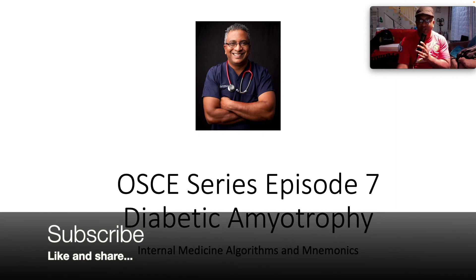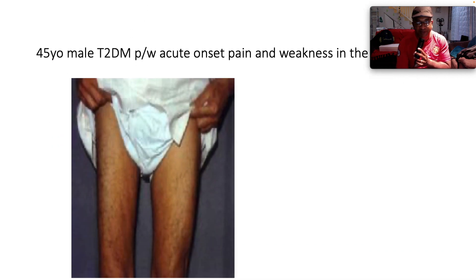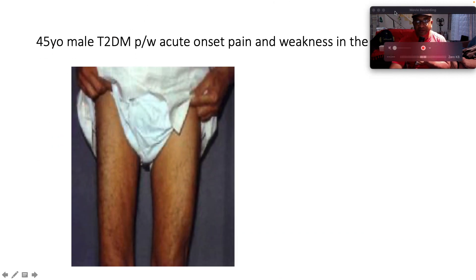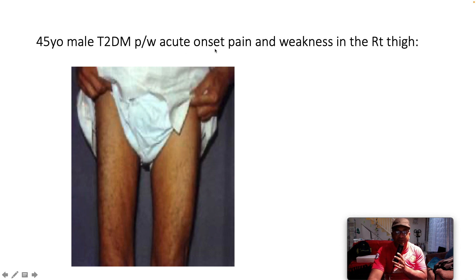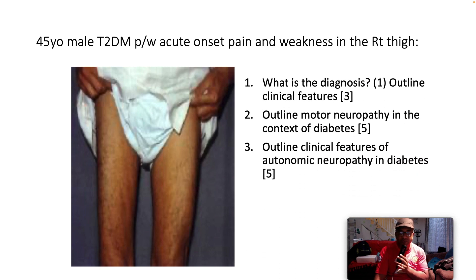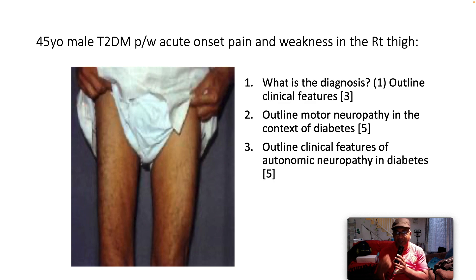If you haven't yet subscribed to my channel, I strongly encourage you to hit that subscribe button. So this is the stem of our question. We have a 45-year-old male with type two diabetes mellitus, presenting with an acute onset of pain and weakness in his right thigh. The questions are: What is the diagnosis for one mark and outline clinical features? Secondly, outline the concept of motor neuropathy and its subtypes in the context of diabetes mellitus for five marks. Then, outline clinical features of autonomic neuropathy in the context of diabetes for five marks.